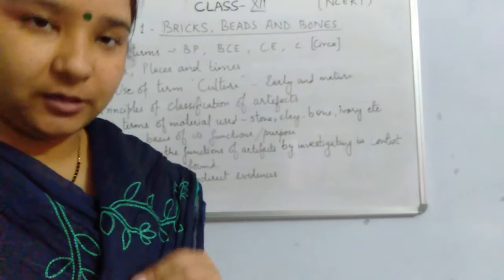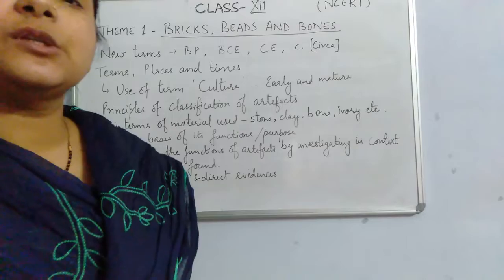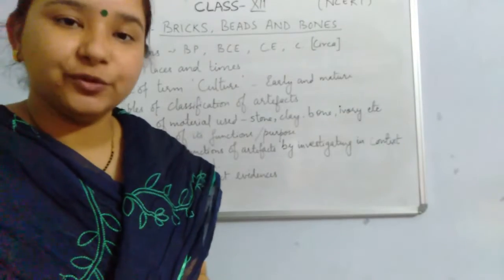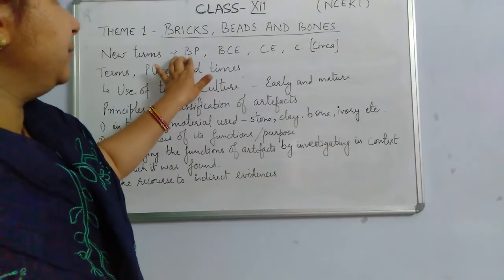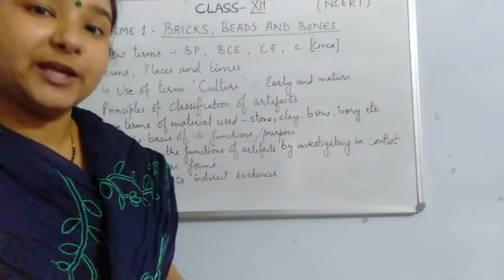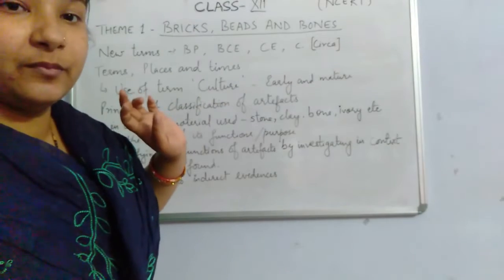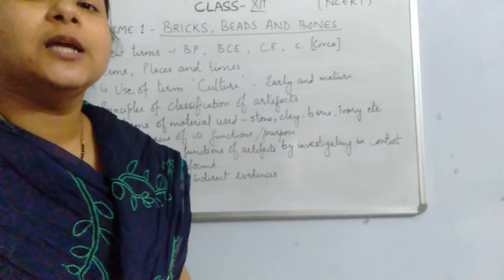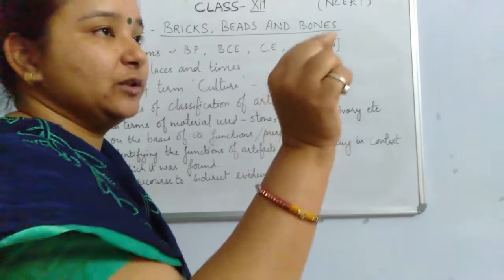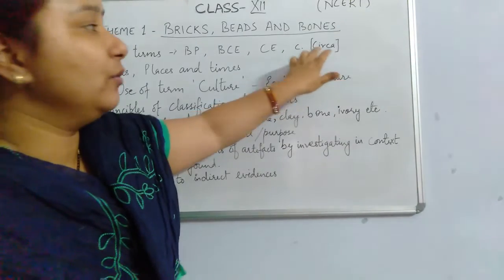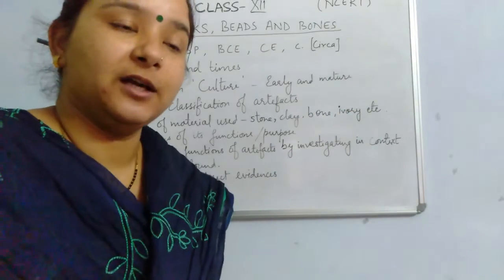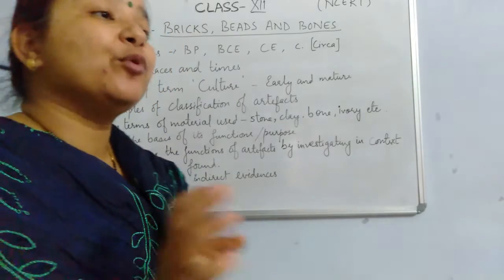Earlier we used BC and AD with dates, but now certain new terms have been introduced in the subject. BP stands for 'Before Present.' BCE is 'Before Common Era' — we are living in the Common Era, so CE stands for 'Common Era.' You will also often see a small 'c.' written with a date — that stands for 'circa,' which means approximately, indicating that the event happened around that time frame.